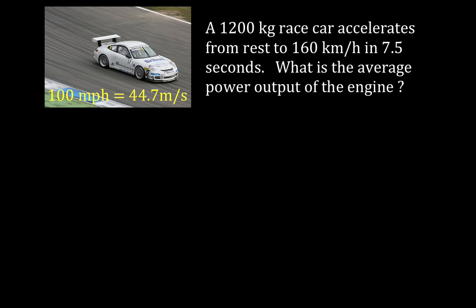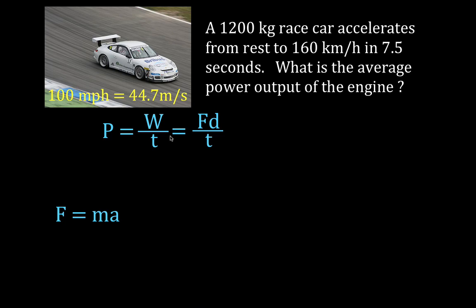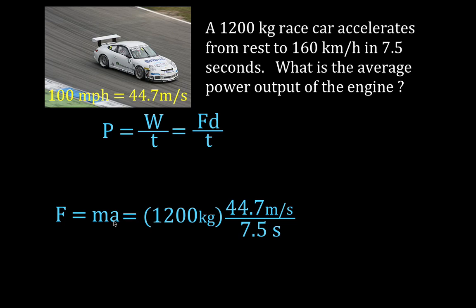For number three, power equals work divided by time, and work is force times distance divided by time. We calculate the force the same way — mass times acceleration — and we get, once again, 7,152 Newtons. Now we need the distance. We're not given it, but we can calculate it using the kinematic equation: distance equals one-half times acceleration times time squared.